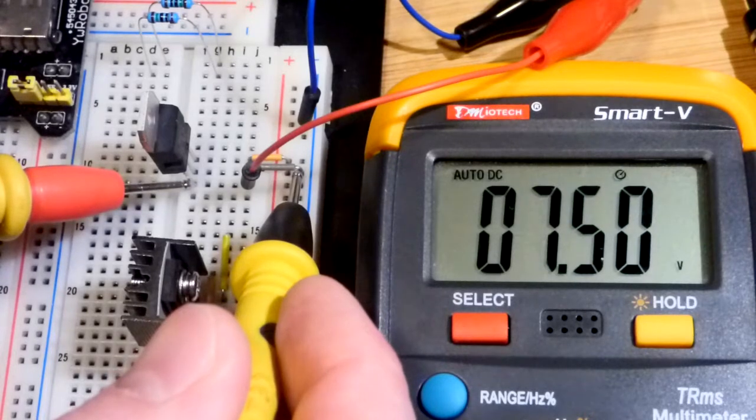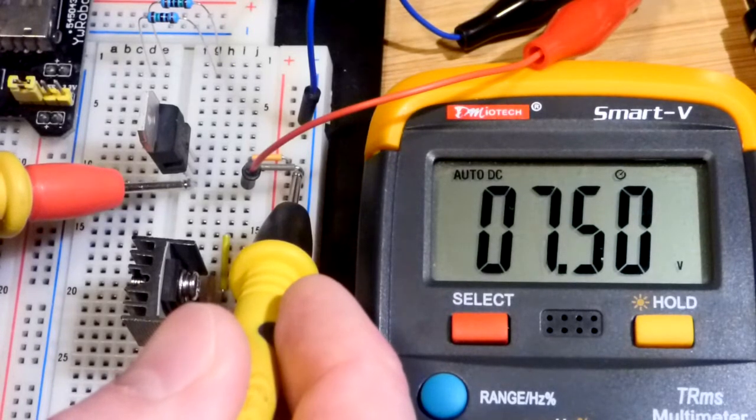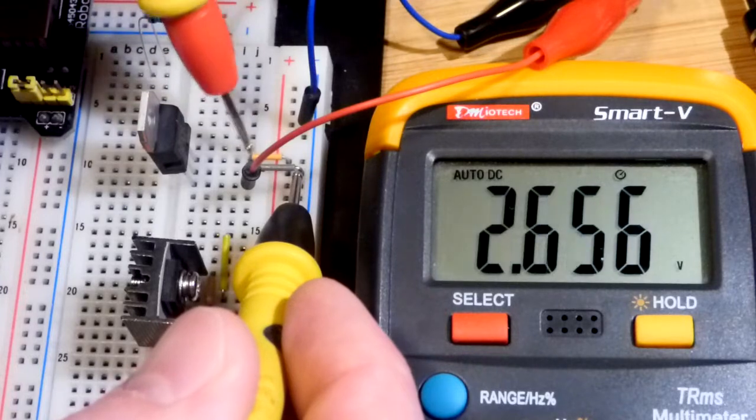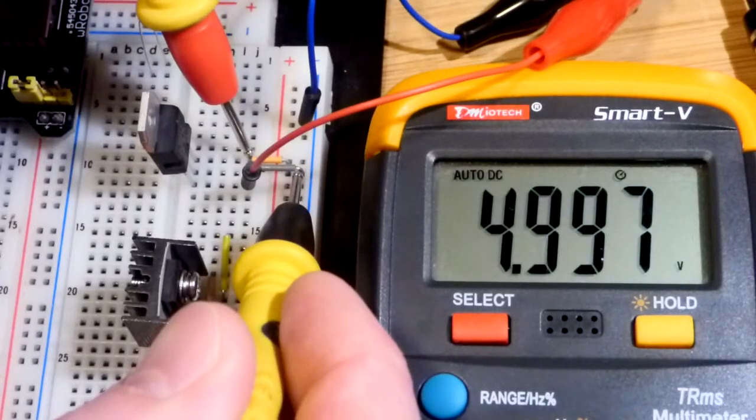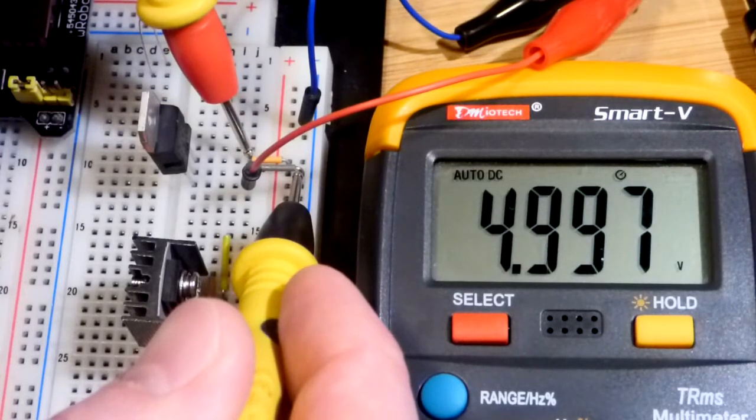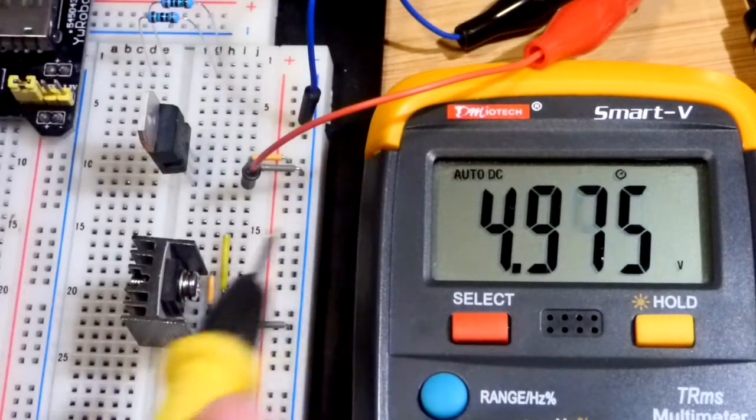If we look at our input right now, we have 7.5 volts—that's what I set my bench power supply to. And over here we have 5 volts, pretty much spot on. That's what this integrated circuit does.